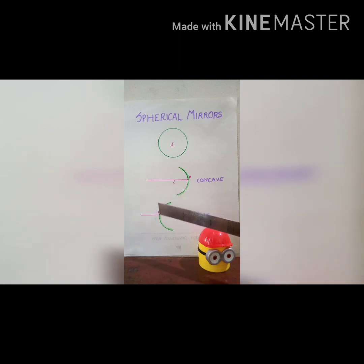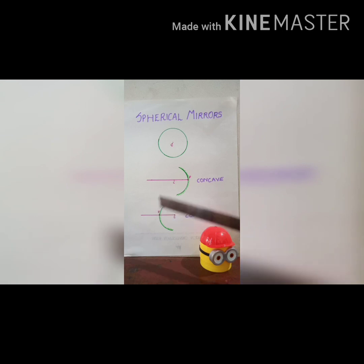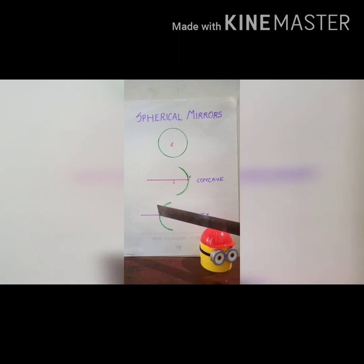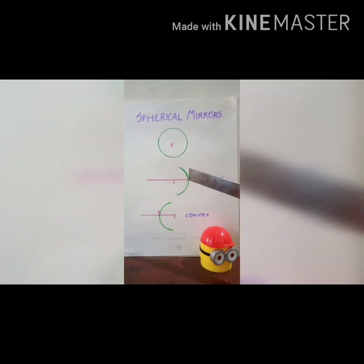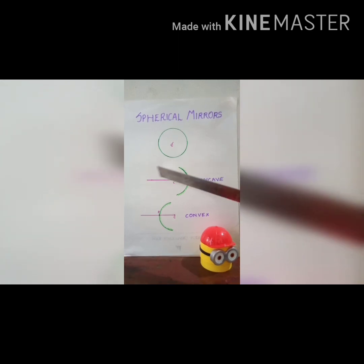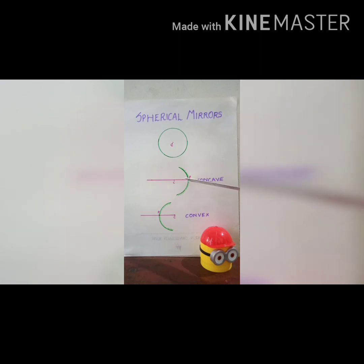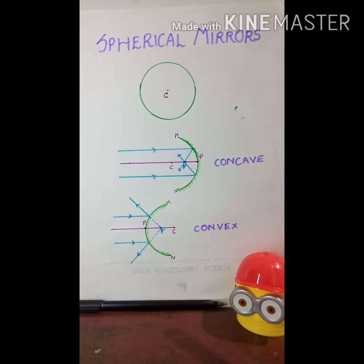What is the pole? The center point of the mirror is called the pole of that mirror. Now, for study purposes, the line that passes through the center of curvature and the pole is called the principal axis. The other thing we need to know about the mirror is the aperture.